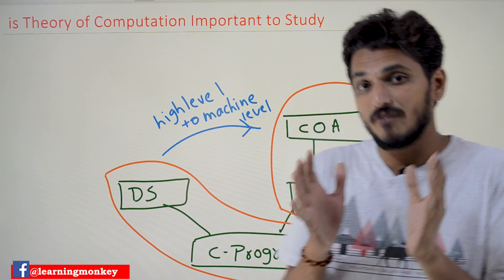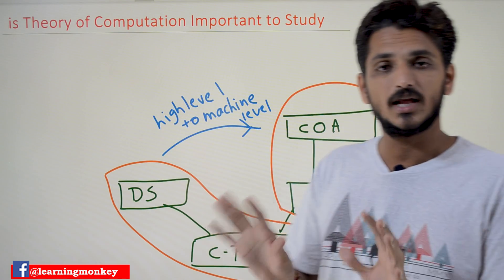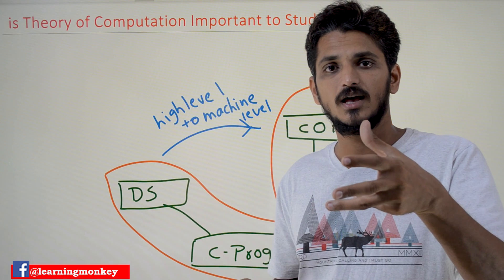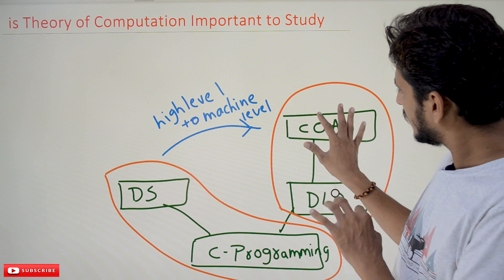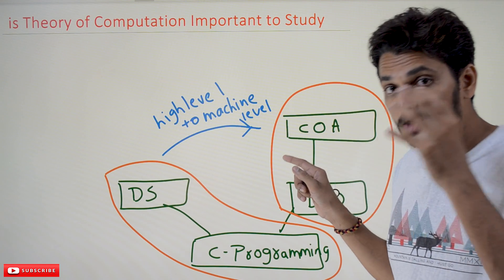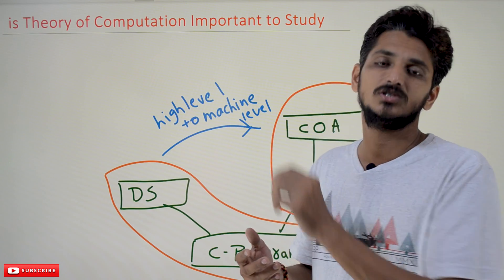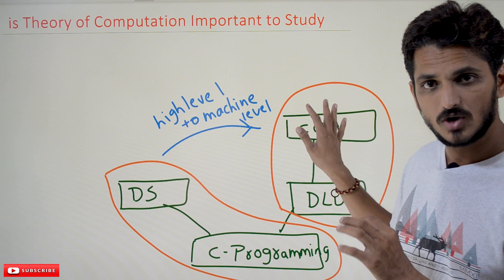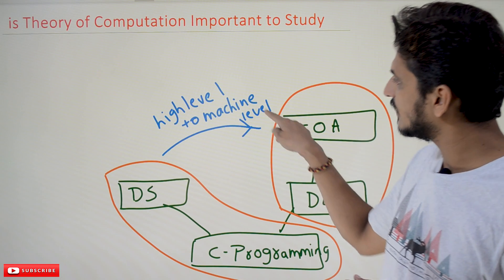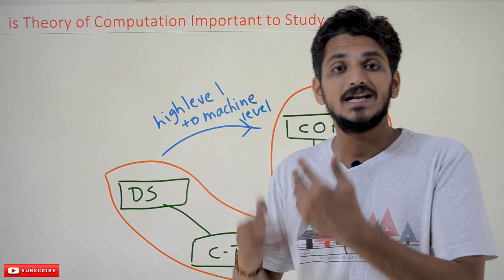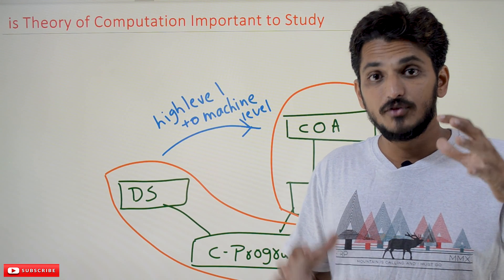If you want to have a deeper understanding, if you really want to feel computer science, these two packages are not enough — one more package is needed. You have a good understanding of high-level programming languages, and after Computer Organization and Architecture you understand how machine-level instructions work. Now you have to understand how high-level programming language is converted into machine-level language.